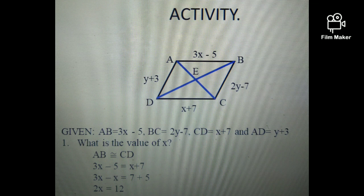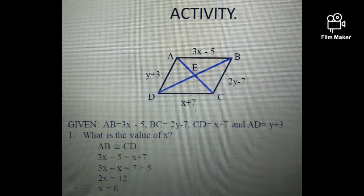Simplify. 3X minus X is equal to 2X, and 7 plus 5 is equal to 12. Divide both sides by 2 to get the value of X. So our X is equal to 6.